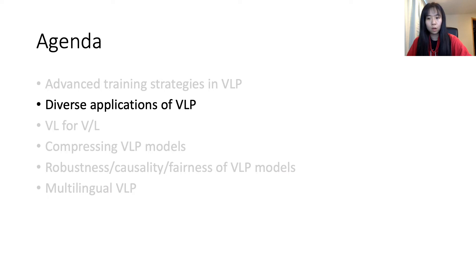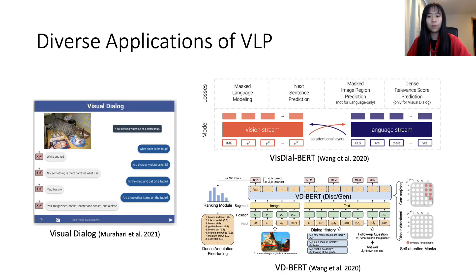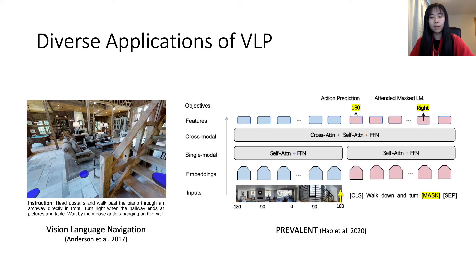In the next part of the talk, I will briefly introduce many works on diverse applications of VLP. Pioneering works in VLP cover tasks ranging from VQA to image captioning, but what about VL tasks not considered there? Can we apply VLP to other VL tasks? On visual dialogue, a multi-turn dialogue-based visual question answering task, pre-trained VisualBERT and VD-BERT are proposed. On visual language navigation, where the model needs to predict actions based on textual instructions to navigate through a room, Prevalent is introduced to leverage VLP for vision-language navigation.